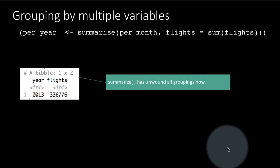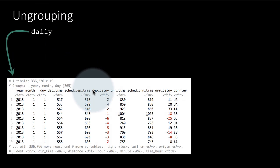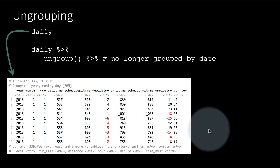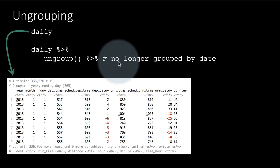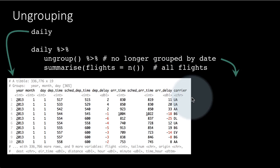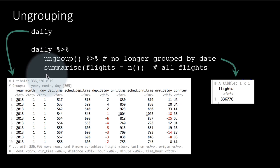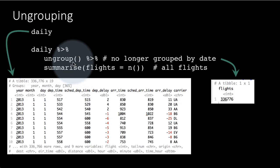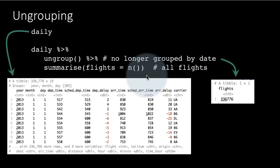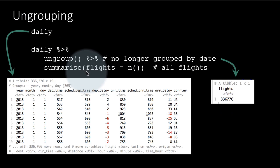Summarize automatically ungroups one level of grouping each time. Sometimes we may want to ungroup manually. For example, 'daily' has all its groups — if you call daily %>% ungroup(), it is no longer grouped. Then if you do summarize(flights = n()), you get back just one row. You took 'daily' which was grouped by three levels — year, month, and day — ungrouped it so there is no longer any grouping, and summarizing gives you the total count of all flights in one row. This code is only to demonstrate how ungrouping works.